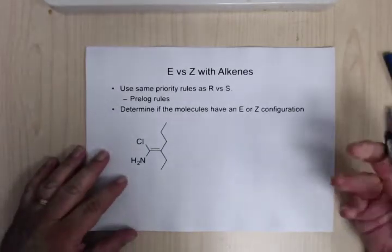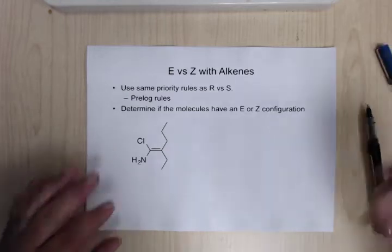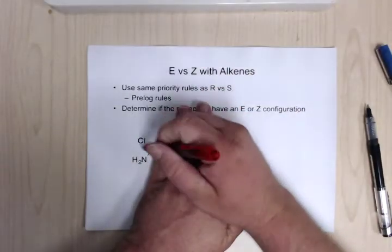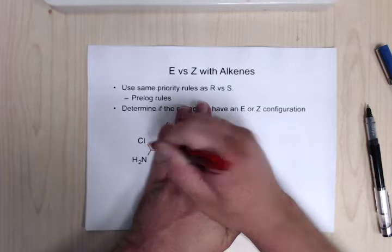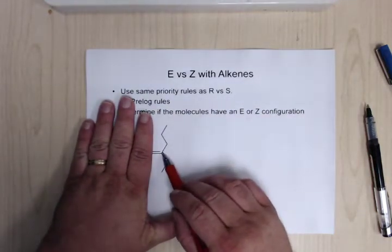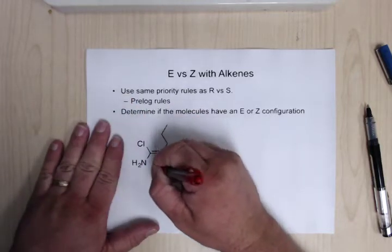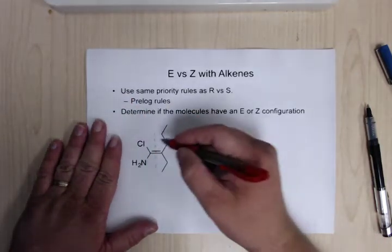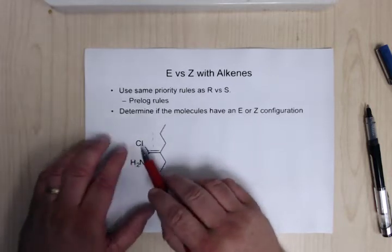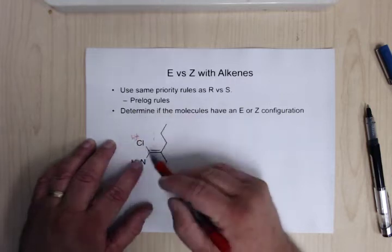We're starting on alkenes — determining E and Z. Remember, we're looking at the high/low priority on the carbon on one side of the double bond versus the high/low priority on the carbon on the other side. For this carbon, we have a chlorine versus a nitrogen. Chlorine is heavier than nitrogen, so this is going to be high priority.